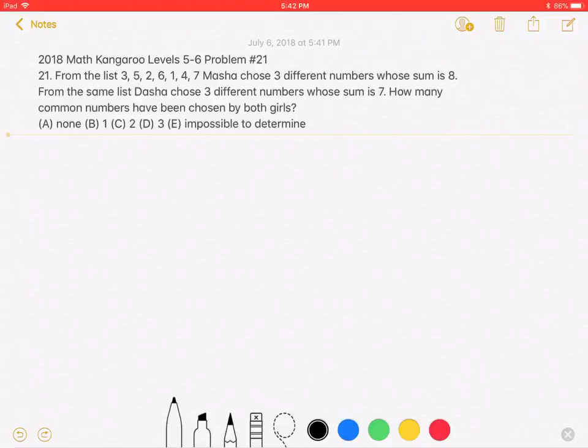How many common numbers have been chosen by both girls? A, none, B, 1, C, 2, D, 3, or E, impossible to determine.